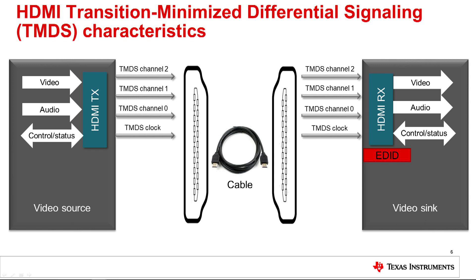For a device to be certified as an HDMI 1.4b or HDMI 2.0 device, it must pass compliance tests that test the integrity of the TMDS signals. Compliance is required if you want your device to be HDMI certified. These compliance tests can be difficult to pass due to the signal integrity issues that accompany the high data rates of HDMI 1.4b and HDMI 2.0. If the compliance tests are failed, then a system redesign will likely be required.